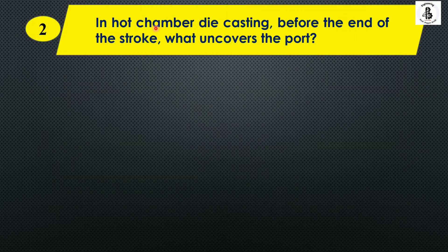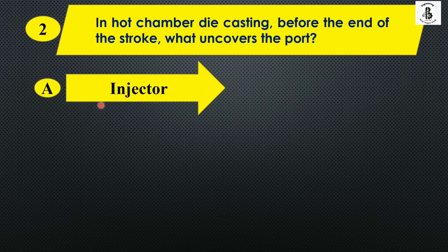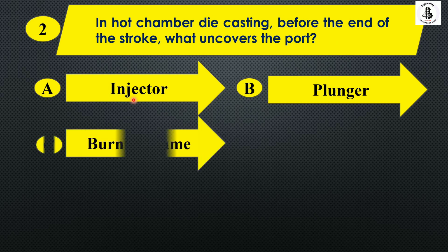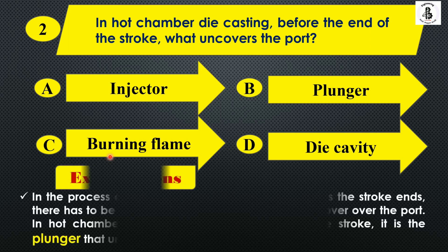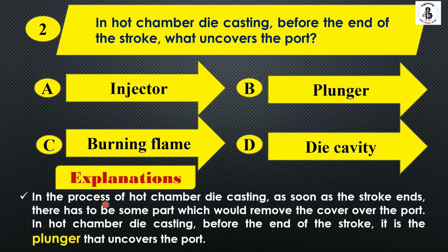Next question: In hot chamber die casting, before the end of the stroke, what uncovers the part? Option A: injector, Option B: plunger, Option C: burning flame, and Option D: die cavity. In the hot chamber die casting process, as soon as the stroke ends, it is the plunger that uncovers the part — that is its main function. So the right answer is Option B.